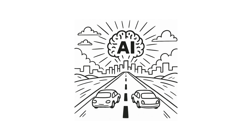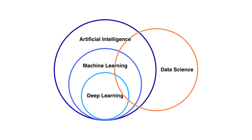If AI is the end goal — building systems that can think and act intelligently — then machine learning and deep learning can be thought of as the vehicles that help us get there.